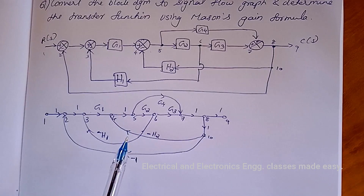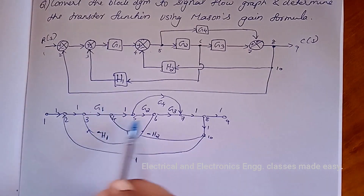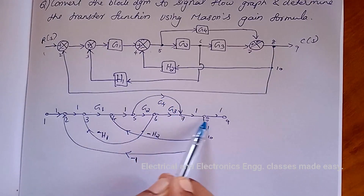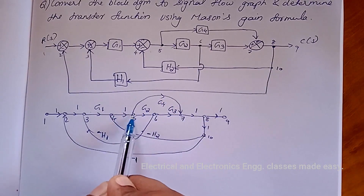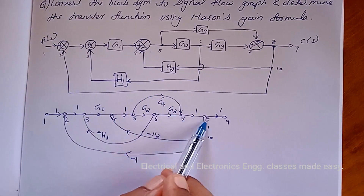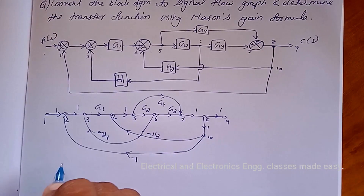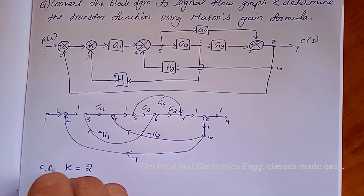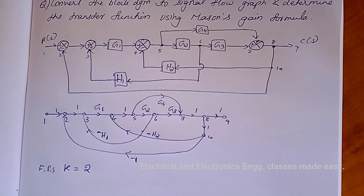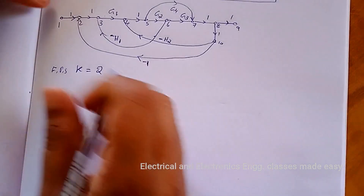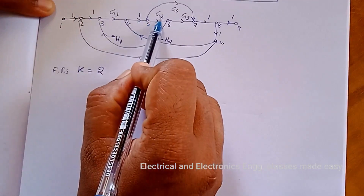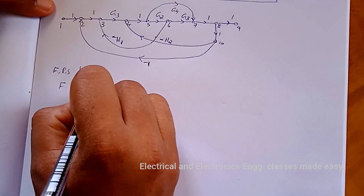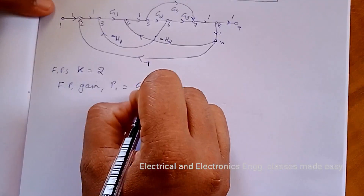Now we have to find the forward paths. There is one forward path from 1, 2, 3, 4, 5, 6, 7, 8, 9 and another forward path from 1, 2, 3, 4, 5, 7, 8, 9. So there are two forward paths; the number of forward paths k equals 2. Now we find the forward path gains. The first forward path gain is P1 = G1·G2·G3. The second forward path gain is P2 = G1·G4.